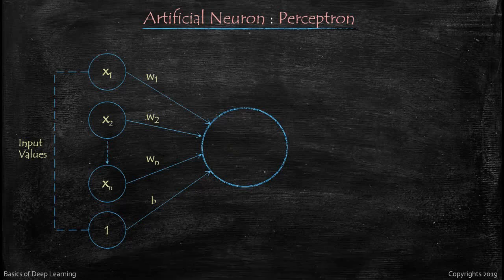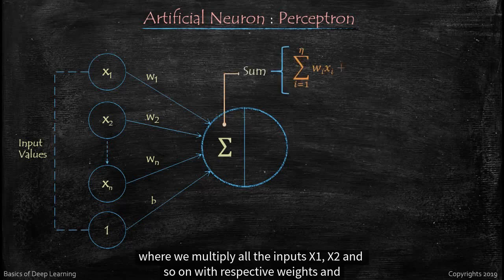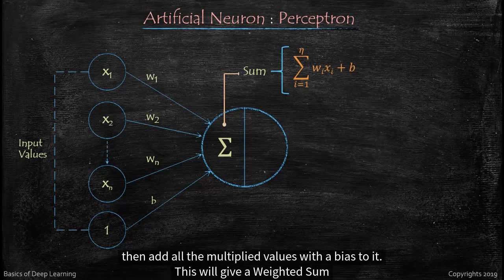So let's have a look at it. First step is a weighted sum where we multiply all the input X1, X2 and so on with respective weights, and then add all the multiplied values with a bias to it. This will give a weighted sum.